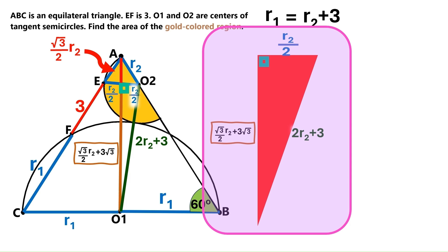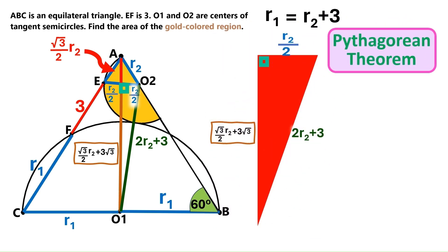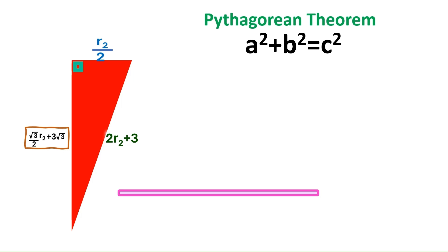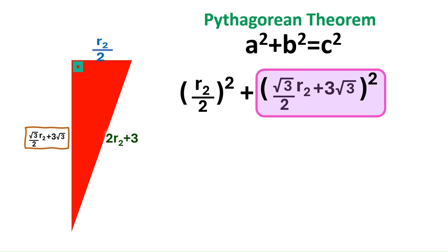And that means we can use the Pythagorean theorem. Now, according to the Pythagorean theorem, the sum of the squares of the shorter sides of a right triangle equals the square of its longest side. We'll need more space for that. Now, this R2 over 2 is one of the short sides. So let's take its square. This is also one of the short sides. So let's take its square as well. And this one is the longest side. We'll take its square too.